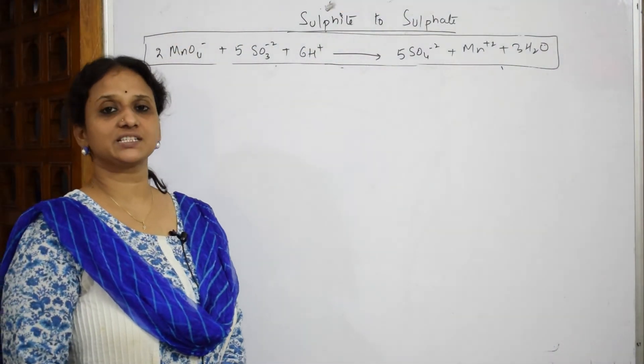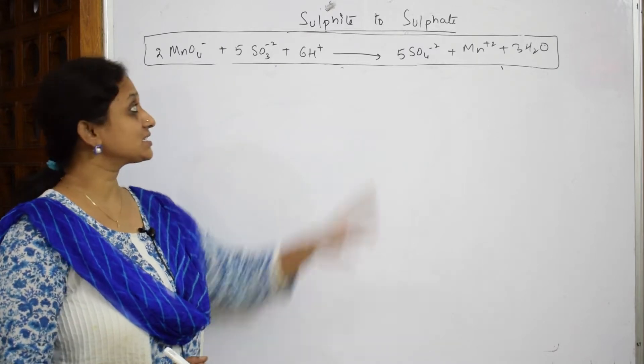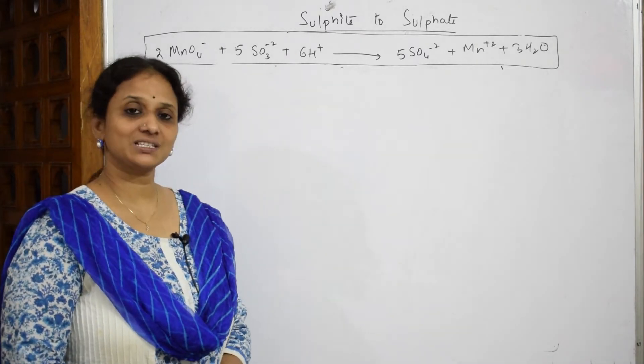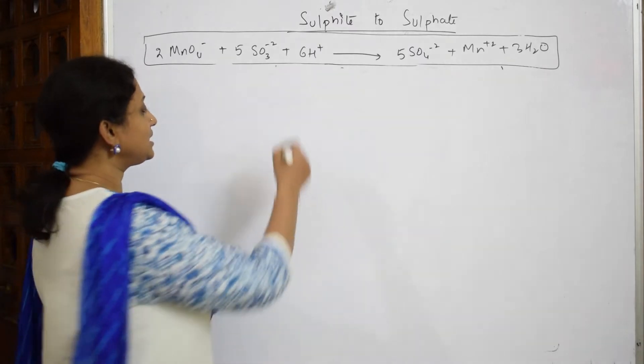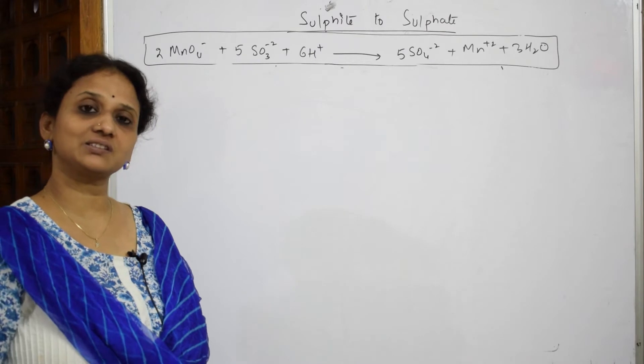Let us come back and do one more oxidizing property of KMnO4 where it is going to oxidize sulfite to sulfate. What is the sulfite? Sulfite is basically SO3^2- and sulfate is SO4^2-. Now we are going to balance this reaction.